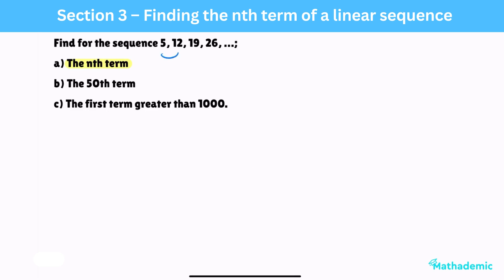As before, find the common difference. Here, it's 7. So, our formula starts with 7n, and taking away 7 from 5 gives us the second half of our formula, minus 2. So, the answer to part a is 7n minus 2.